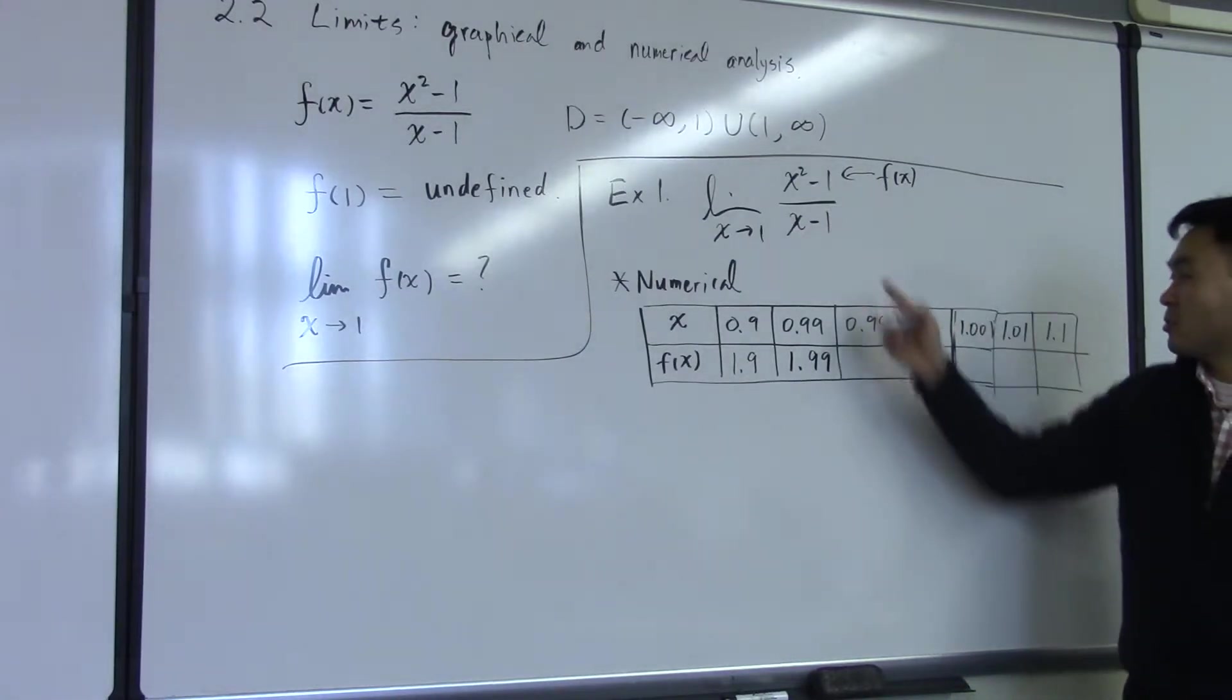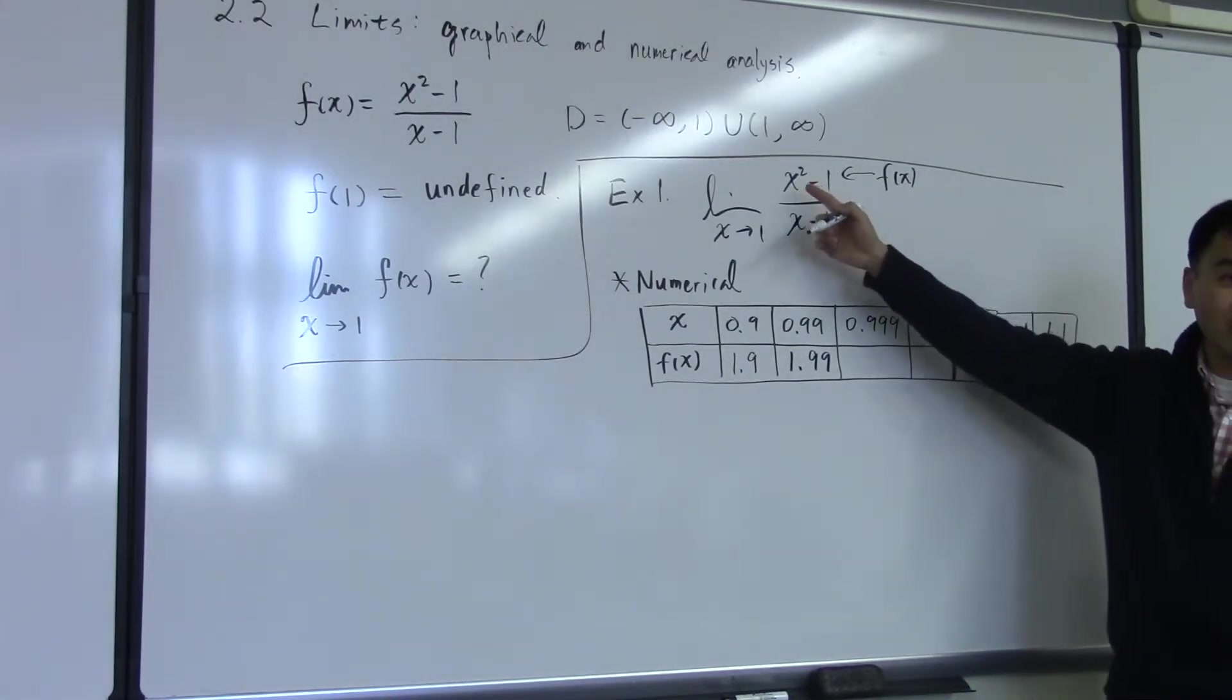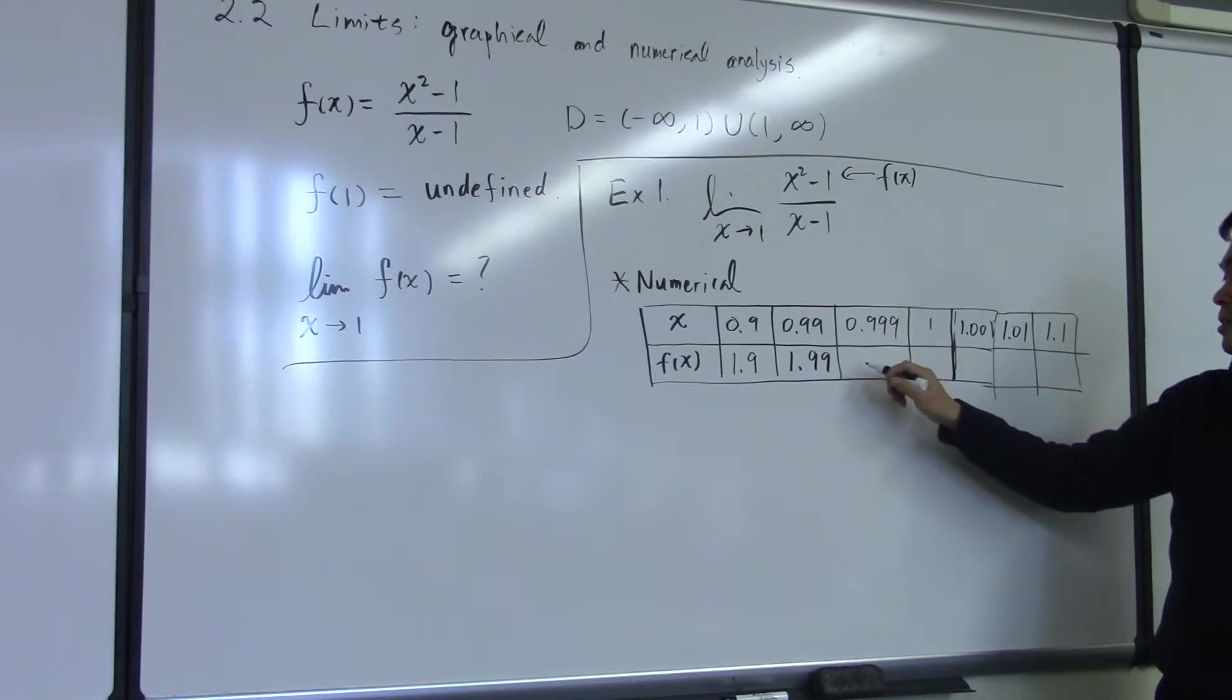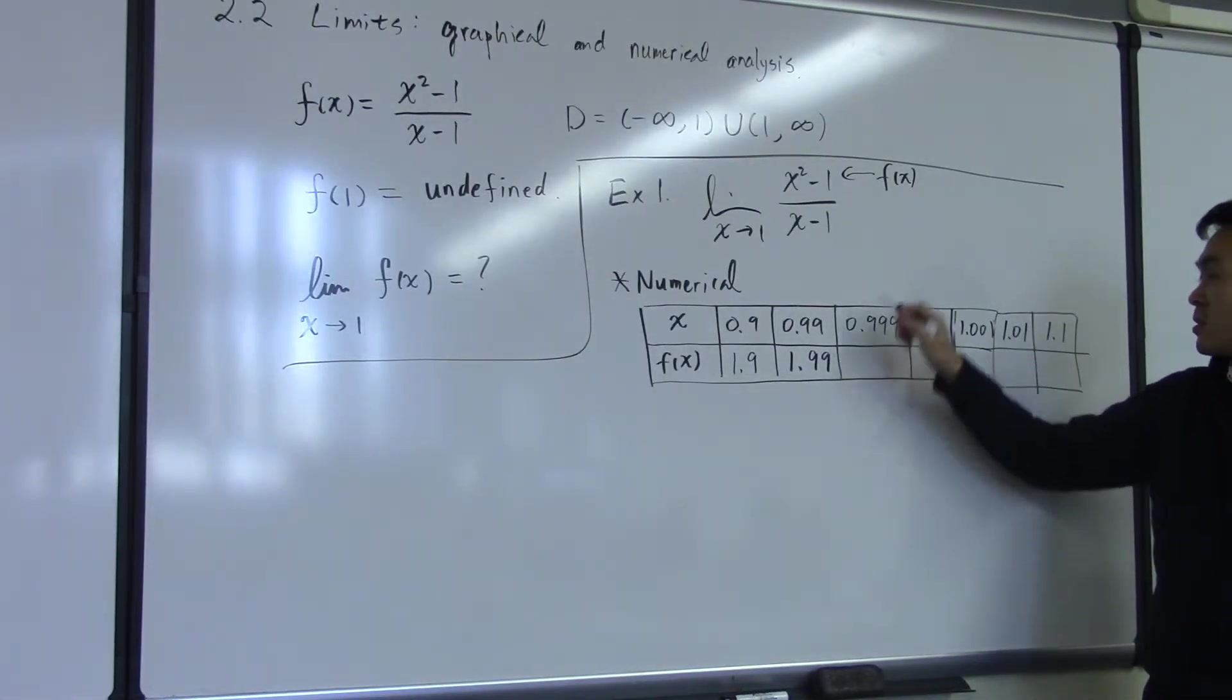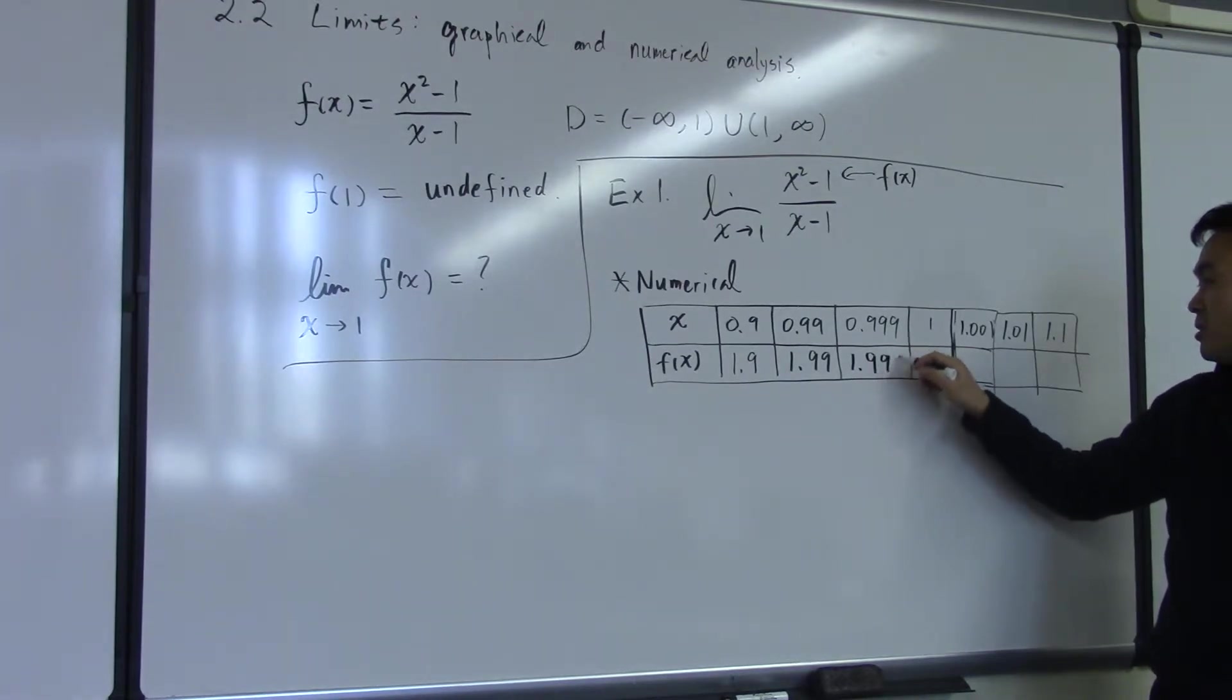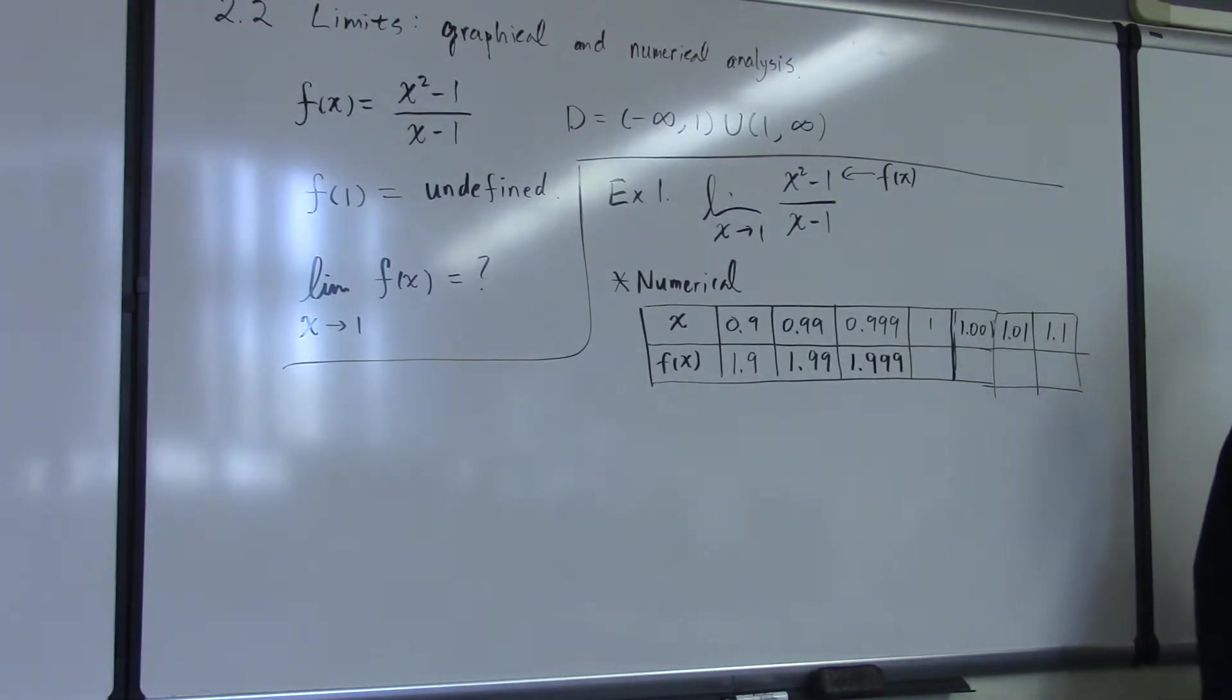And then you plug this in here, 0.999 squared minus 1. It's kind of huge, but after some long calculations, you're going to get 1.999.